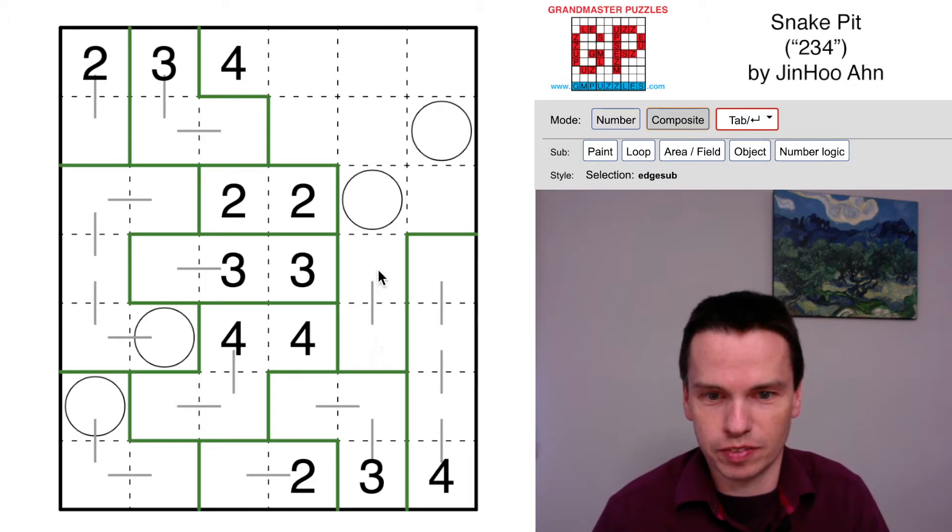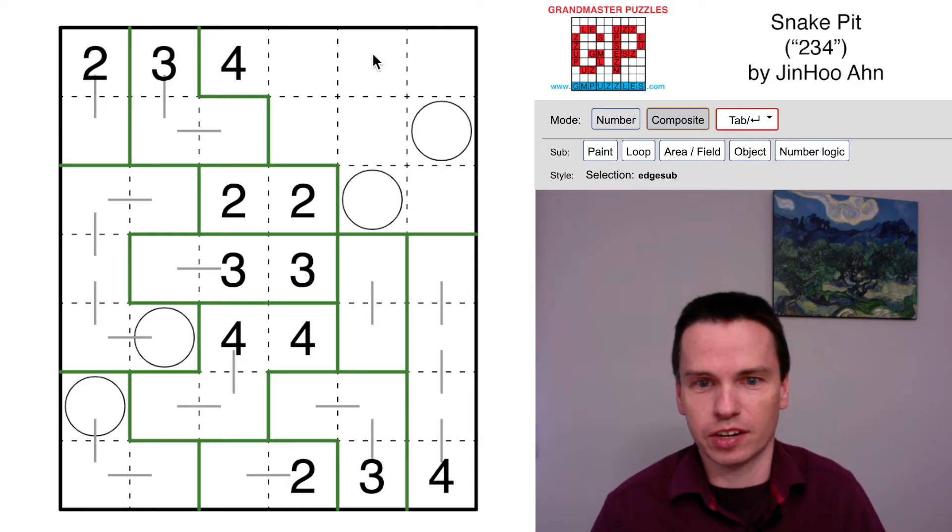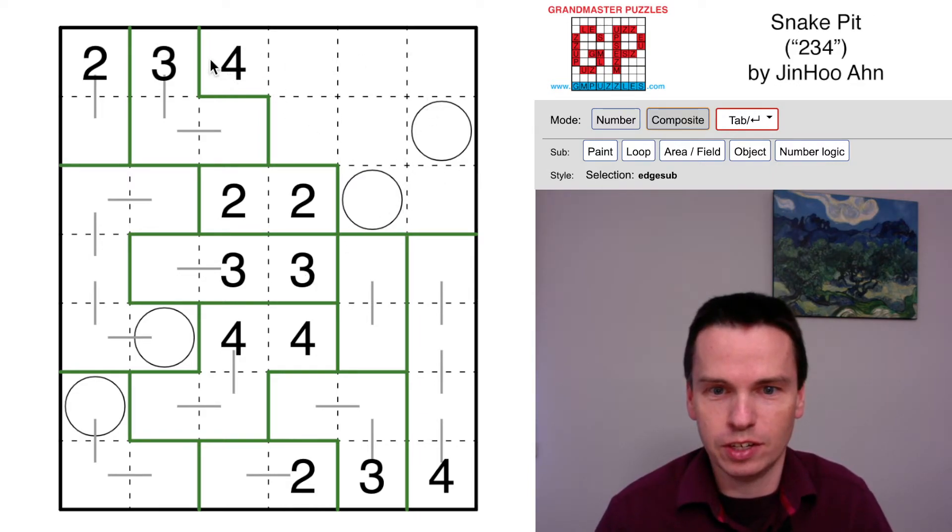On the right side, we have this group coming up that has to be at least two and it can extend to be three because of the digits around it. Now we've got nine cells left which could be four plus five or four plus two plus three.